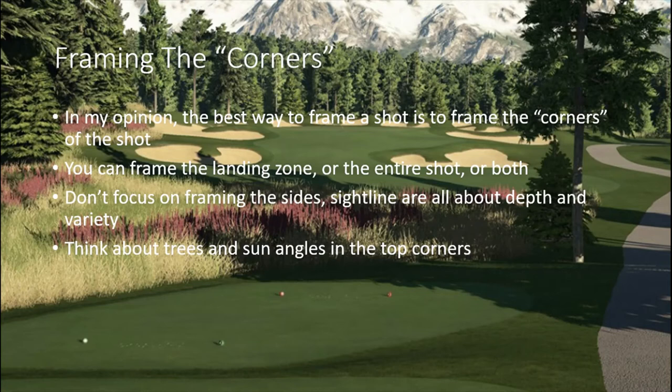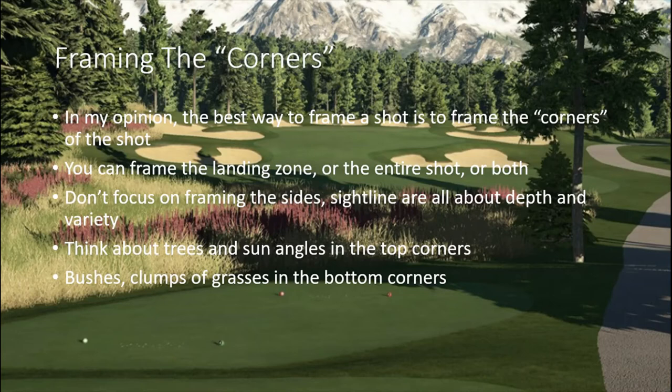Bushes and clumps of grass in the bottom corners — like I showed with Strathlorn — can really move your attention down the fairway towards your target. They can move up into the top corners depending on how hilly or dune-like the course is. Start in the bottom corners, move your attention down the fairway towards where your target is. And it doesn't just have to be the target — you can highlight alternate landing zones or anything else you want in the sightline.